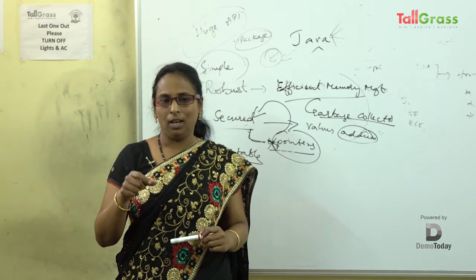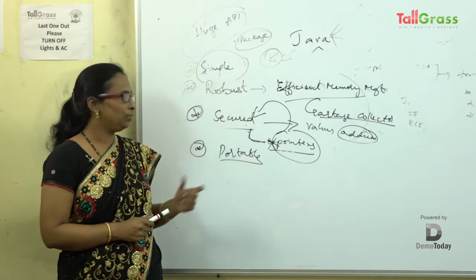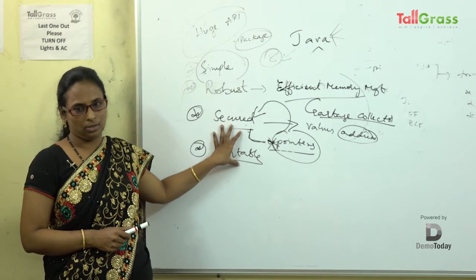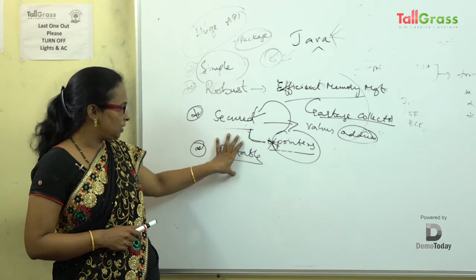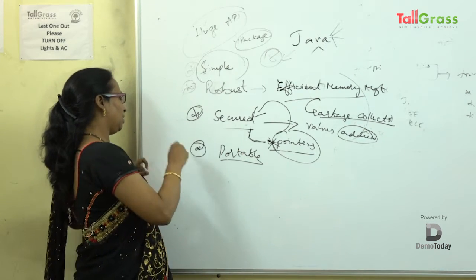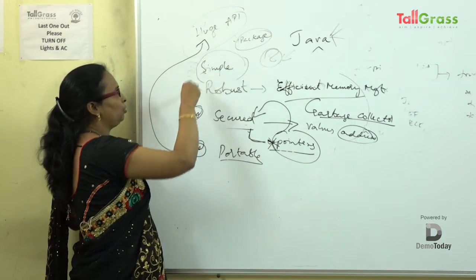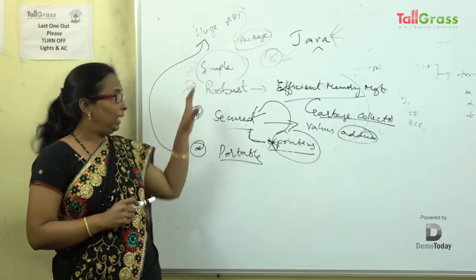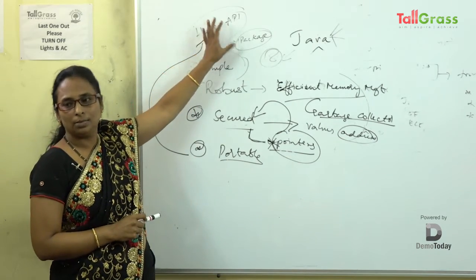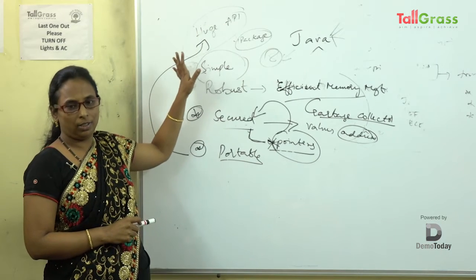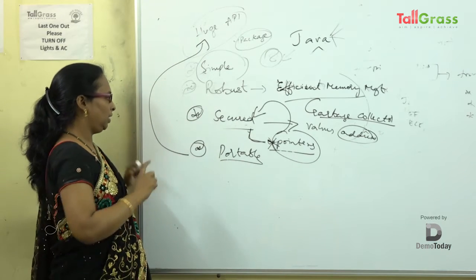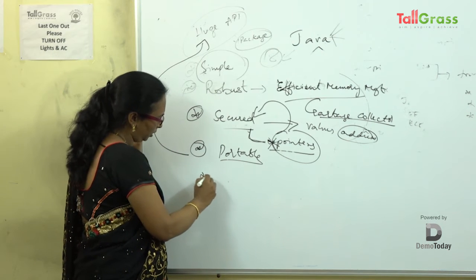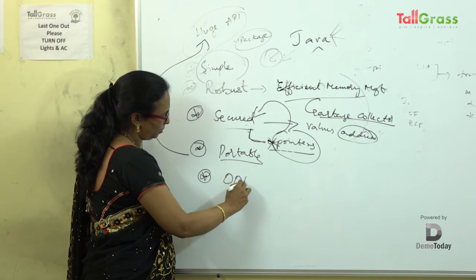How is this achieved? Again, the same answer: Java has a huge API with predefined methods, predefined classes, and predefined interfaces — all of that makes Java portable. The next feature is that Java is an object-oriented programming language.